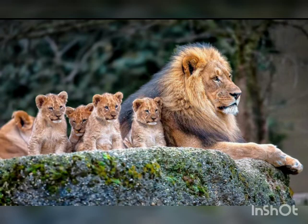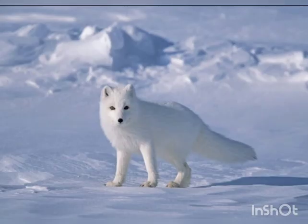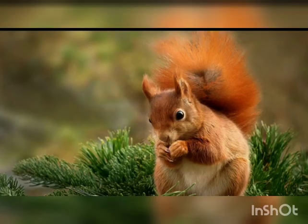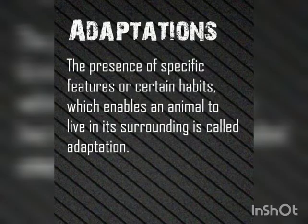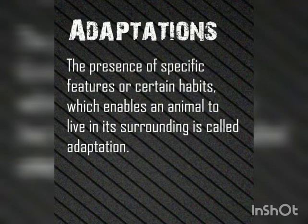So kids, now we know how animals are divided into groups based on their habitat. But do you know that to live in their habitat, animals develop some special features or habits that allow them to survive in their unique habitat? This process is known as adaptation. We can also say that the presence of specific features or certain habits which enables an animal to live in its surroundings is called adaptation.